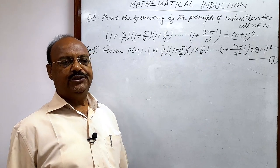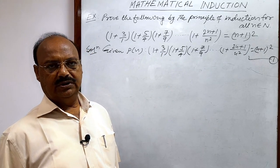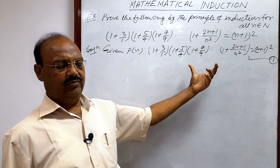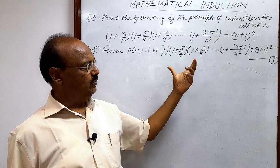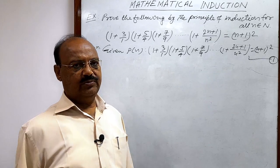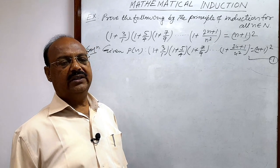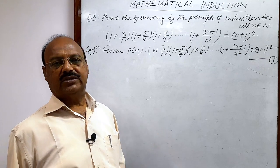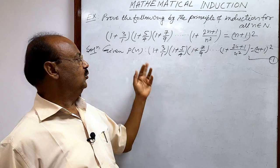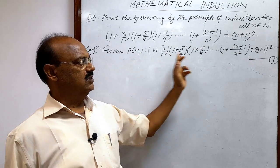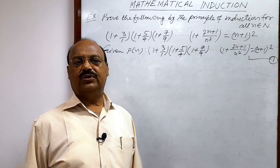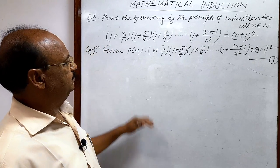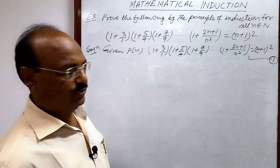The second step is to assume that P(r) is true — that is, when we put n equal to r in the given statement, we get P(r), and we assume it is true. The third and final step is to show that P(r+1) is true — that is, when we put n equal to r plus 1 in the given statement, we have to show P(r+1) is true.